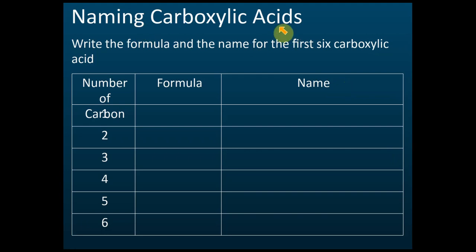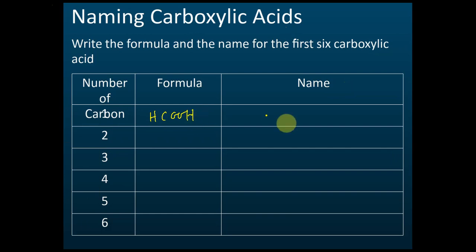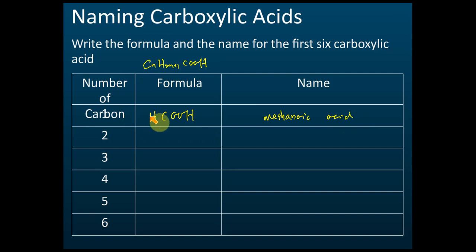For the naming of carboxylic acids: when the number of carbons is one, the formula is HCOOH. Even when n equals zero in the general formula, there is still one carbon in the COOH group, so we call it methanoic acid.